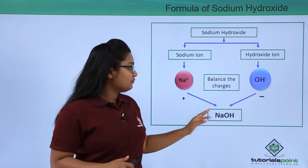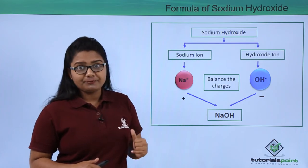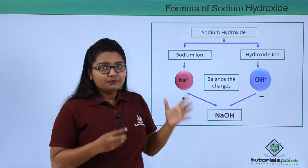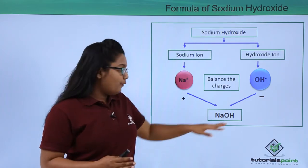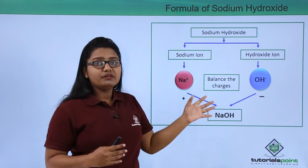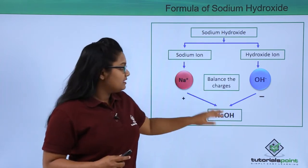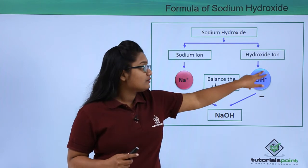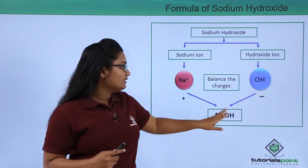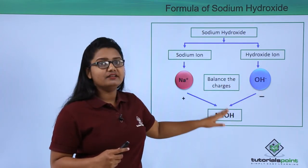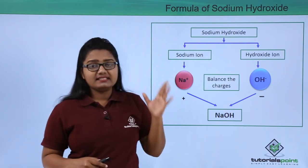The chemical formula for sodium hydroxide is NaOH. You might wonder why I did not put brackets here as I did before. We need to put brackets whenever a polyatomic ion occurs more than once in a compound, but here the hydroxide ion appears only once, so we do not need brackets.